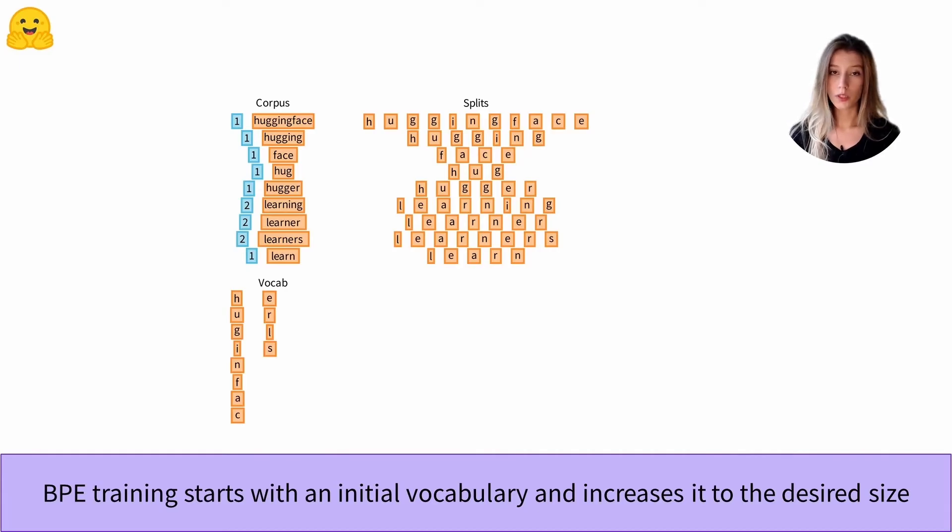Let's now see how to increase it. We return to our split corpus and we will go through the words one by one and count all the occurrences of token pairs.